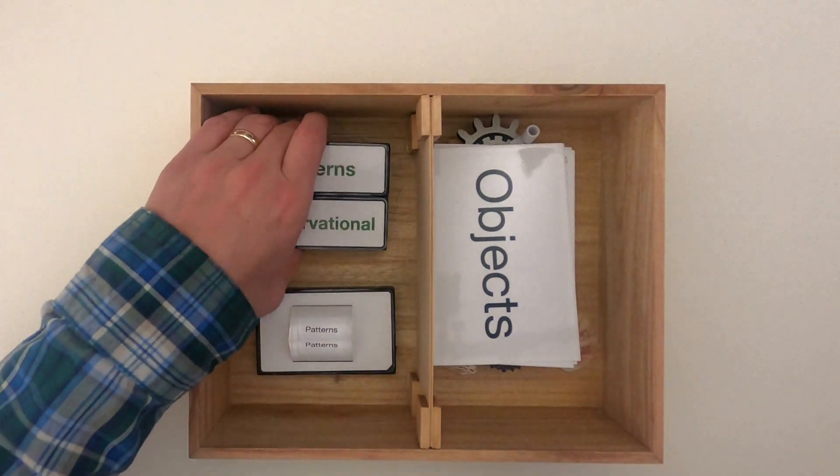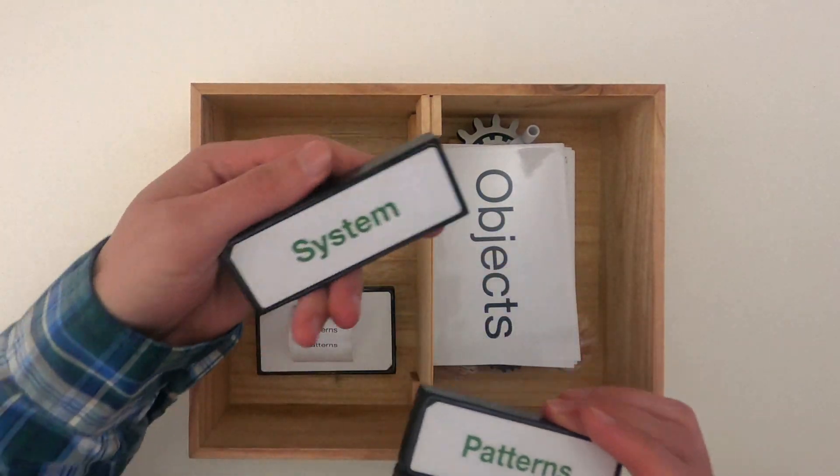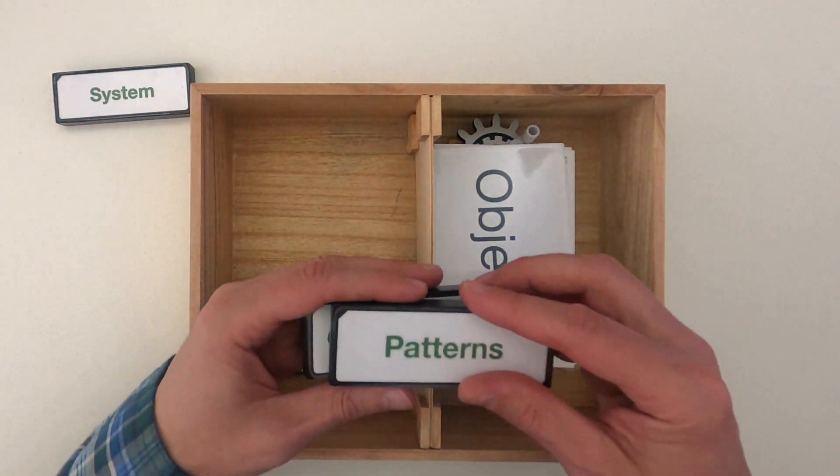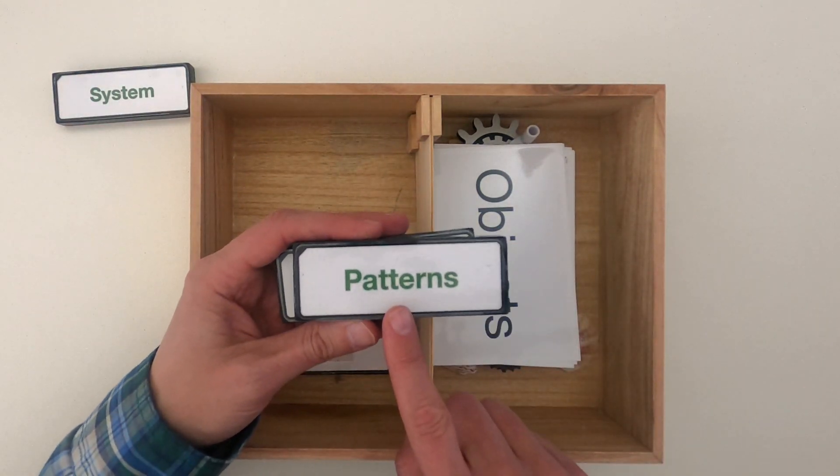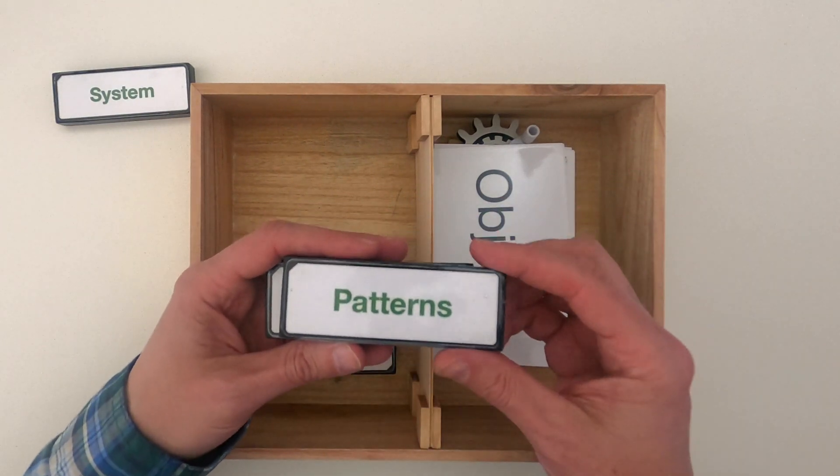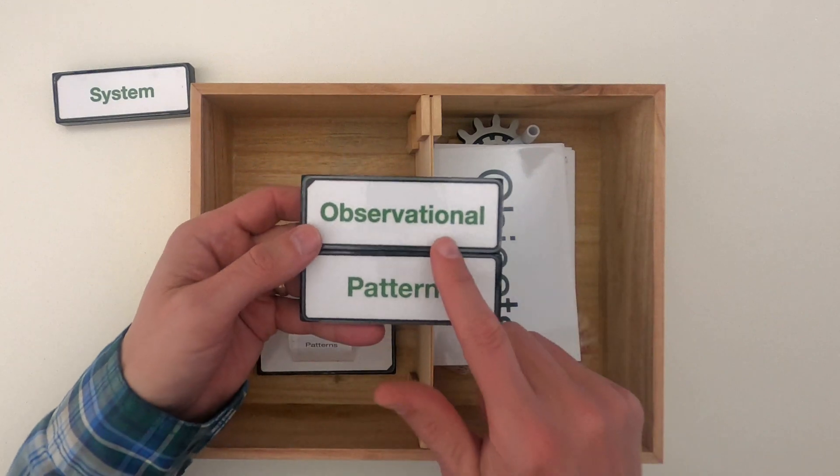When you're looking for patterns, you should always start by defining the system. So in what system are you observing patterns? But there are so many types of patterns in science that it's really important you specify what type of pattern. So in this video, we're just going to talk about observational patterns.